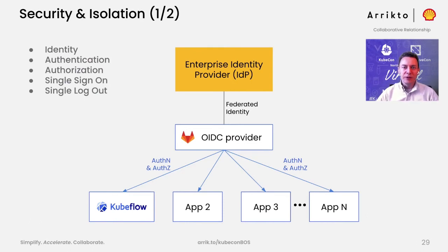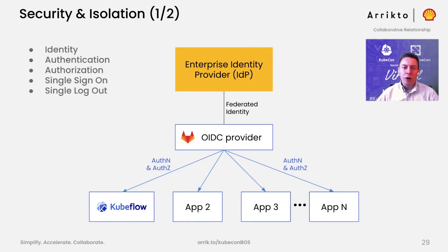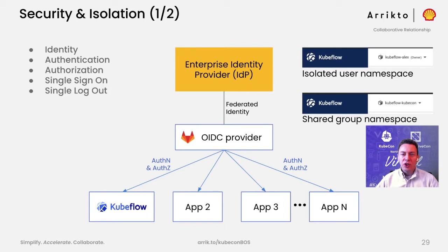Enterprise standards require that all services and applications are secured and use the same user identity throughout all secured assets. Therefore, we've implemented single sign-on. One lesson we learned is that it is not necessary to integrate all applications with the enterprise identity provider. Instead, we can use a self-hosted OIDC provider which federates with the enterprise IDP. We use GitLab, but other OIDC providers can be used as needed. In the case of Kubeflow, this means we provide each user their own isolated namespace, as well as a shared namespace for collaboration. In addition to single sign-on, we have implemented single logout functionality, which allows users to log out directly from application screens.